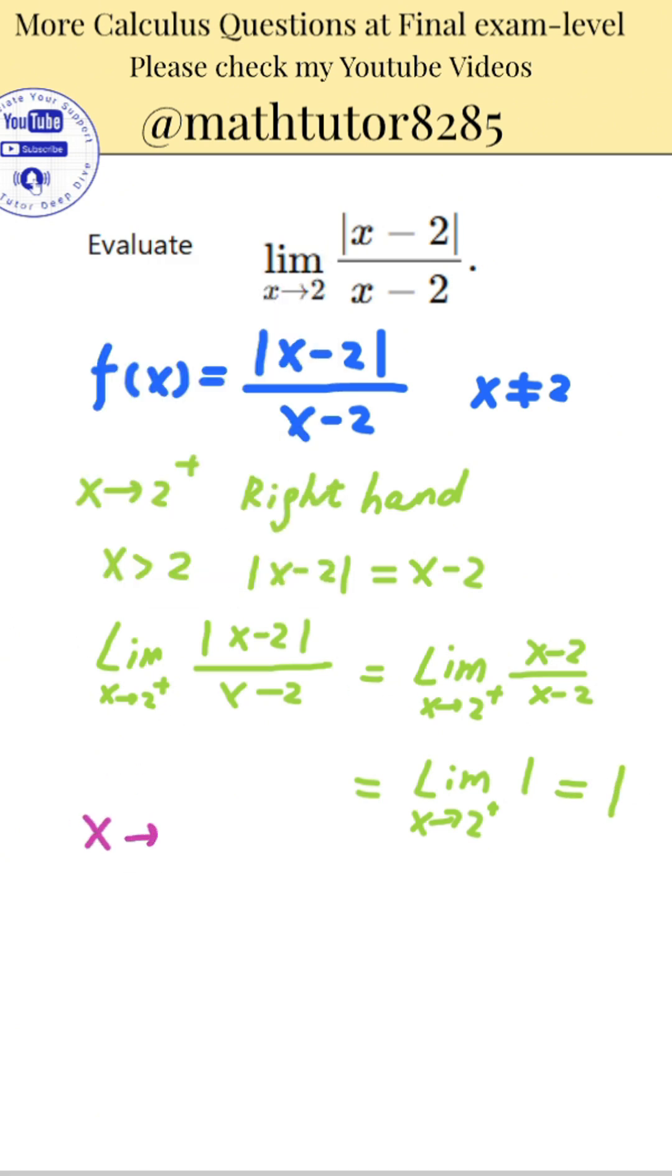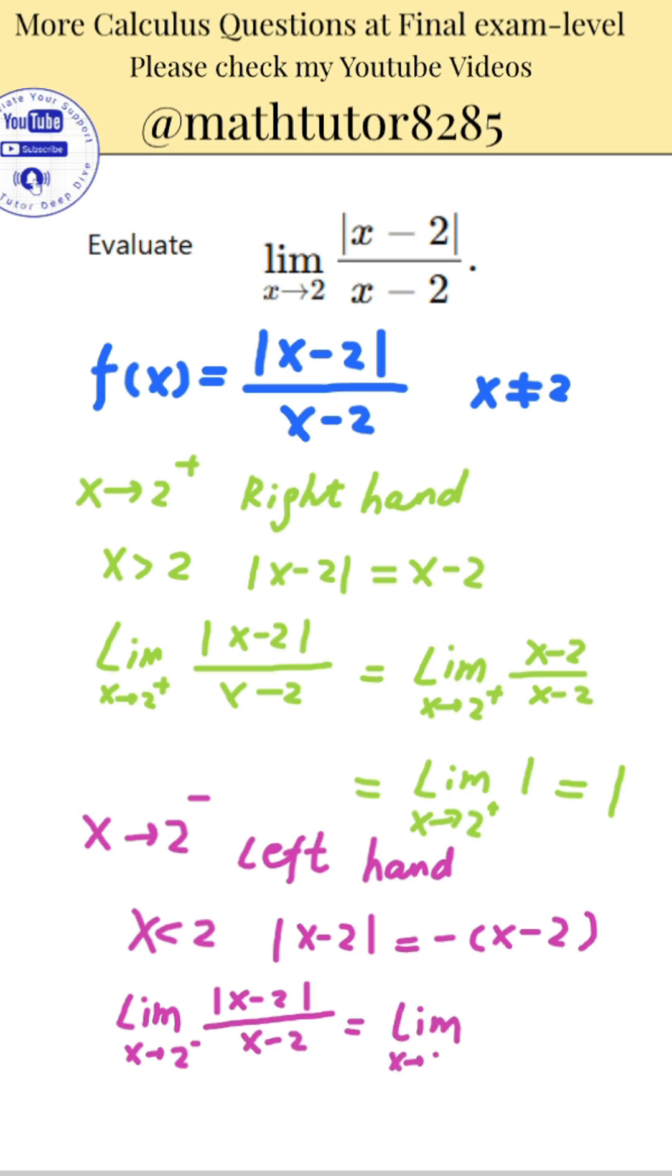Then, consider the left-hand limit as x approaches 2 from values less than 2. When x is less than 2, the expression x minus 2 is negative. The absolute value of x minus 2 becomes the opposite of x minus 2, or negative x minus 2. So the full expression becomes negative x minus 2 divided by x minus 2, which simplifies to negative 1. So the limit from the left-hand side is negative 1.